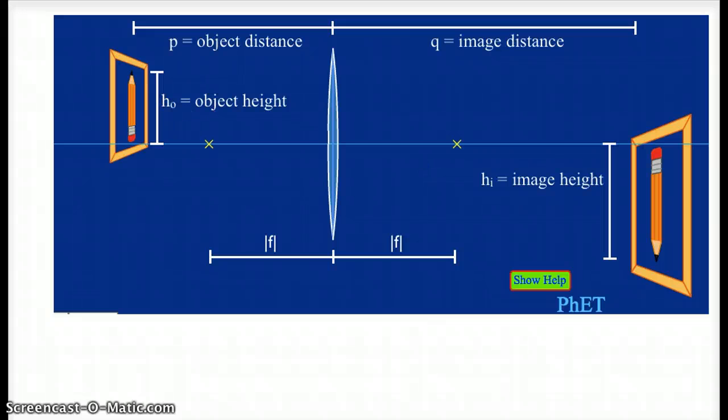So let's relate some of these quantities with some equations. The first equation is known as the lens equation, and it relates the focal length of the lens to the object distance p and the image distance q. So if we know any two out of those three, we can use the lens equation to solve for the other quantity.